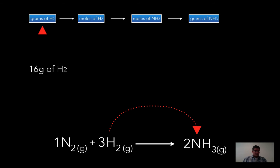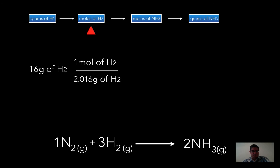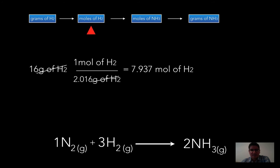My given is in grams of hydrogen, and I need to convert that to moles. The molar mass of hydrogen is 1.008, and since there are two hydrogens, it's 2.016 g/mol. So for one mole of hydrogen, it's 2.016 grams. Doing the math — units cancel — and I end up with 7.937 moles of hydrogen. So 16 grams of hydrogen gives me almost 8 moles of hydrogen.